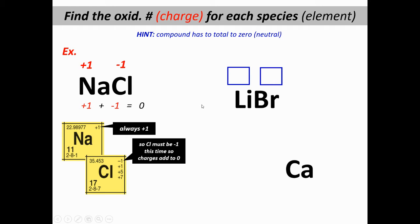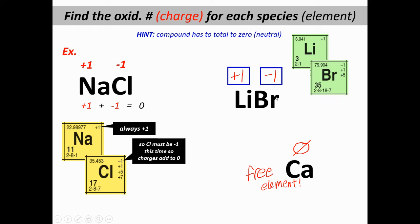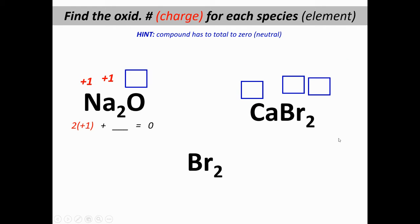What about LiBr and Ca? Take a minute to figure out the charges using your periodic table. Lithium is always plus one, and bromine has to be negative one in this case because positive one and negative one add up to zero — the compound must have charges adding to zero. Ca on its own is a free element, so its oxidation number is zero.